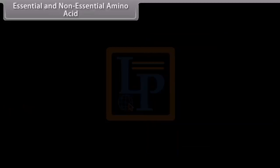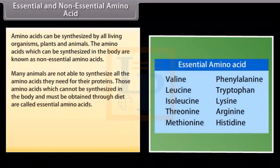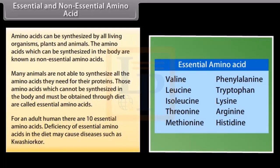Amino acids can be synthesized by all living organisms — plants and animals. Amino acids which can be synthesized in the body are known as non-essential amino acids. Many animals are not able to synthesize all the amino acids they need for their proteins. Those amino acids which cannot be synthesized in the body and must be obtained through diet are called essential amino acids. For an adult human, there are 10 essential amino acids. Deficiency of essential amino acids in the diet may cause diseases such as kwashiorkor.